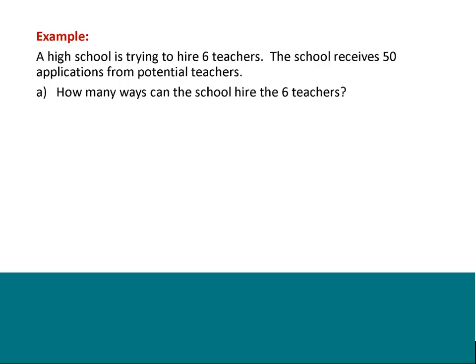Let's write this out. In terms of this question, the key things to look at when you're hiring somebody: in this particular setup, it doesn't say what they're being hired for. It just says you've got six people being hired and they've got 50 applicants. So when looking at this, you've got two things to worry about. First: can you repeat applicants?